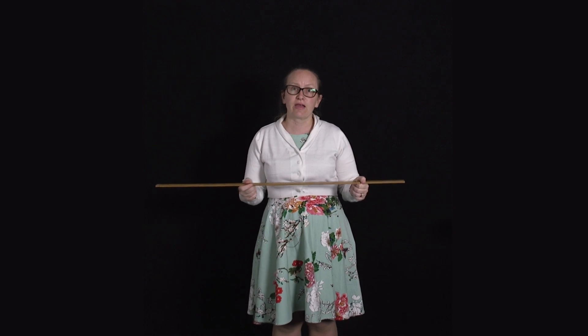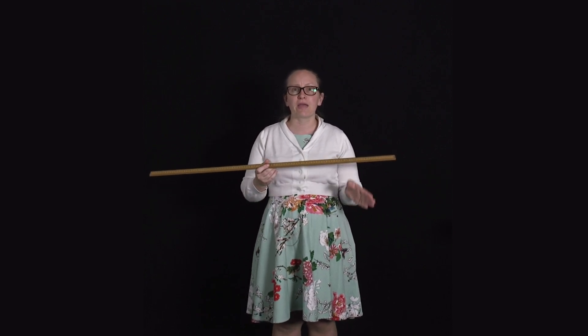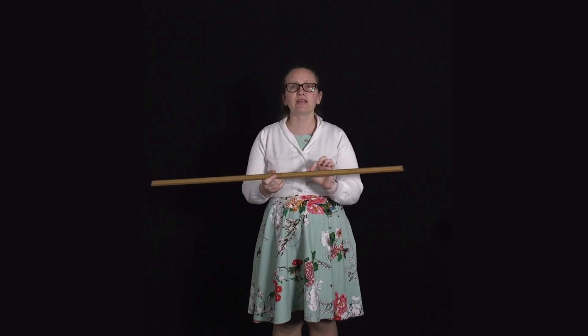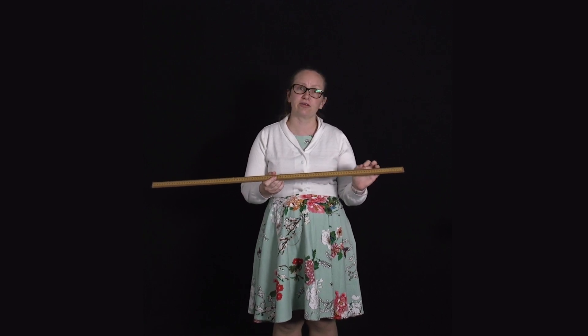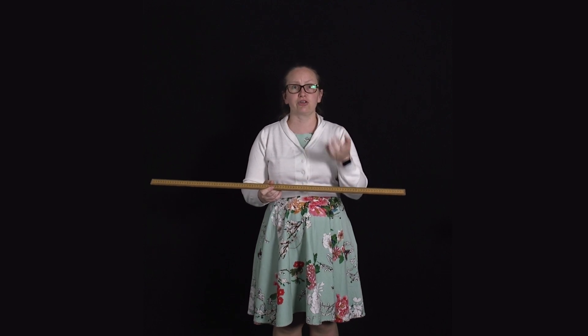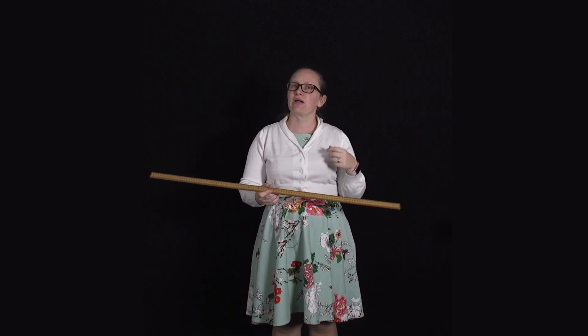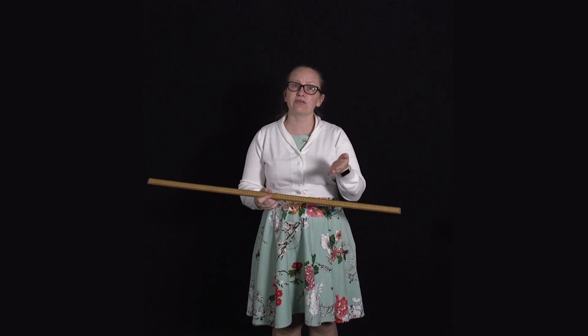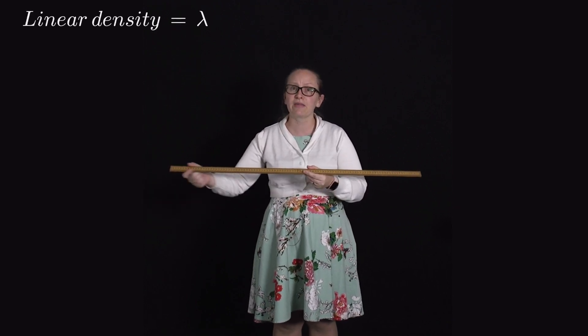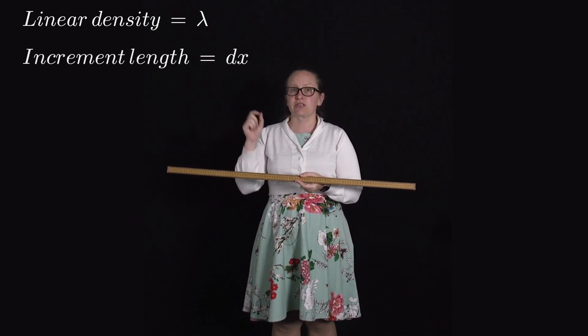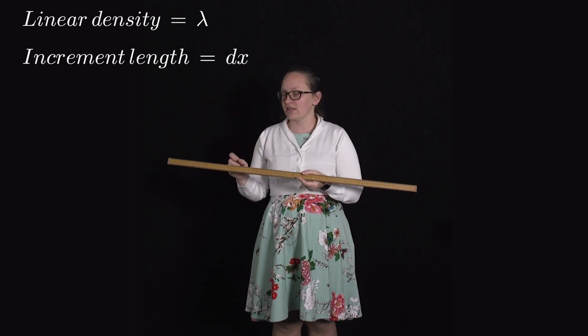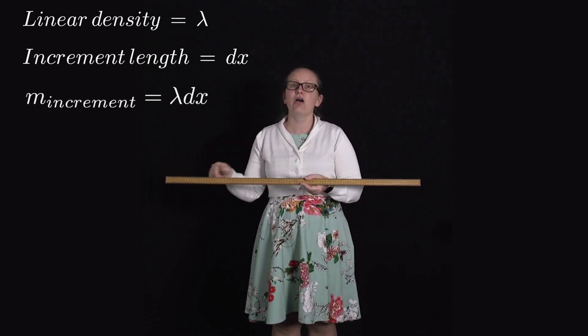In order to do that we need to use integration, but the principle is exactly the same as for the discrete object. Effectively, what we're doing with our metre ruler is breaking it into lots of very short increments, then treating each of those short increments as a particle. We can work out the mass of each increment if we have the density of the ruler — the mass of one little increment with length dx is just dx times the linear density of the ruler.